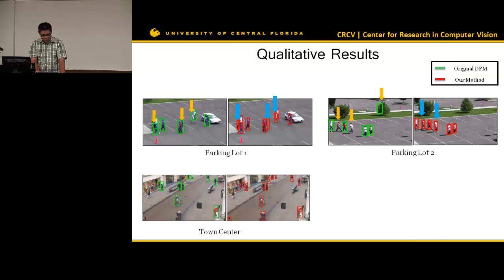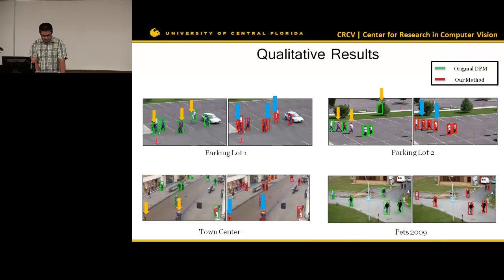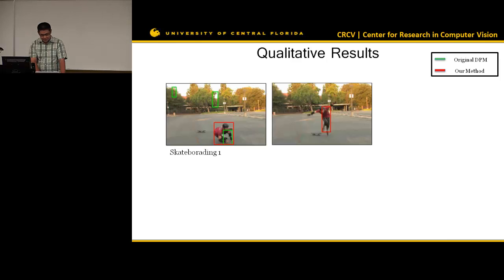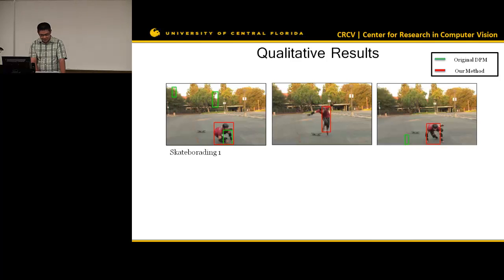Some more examples on the town center dataset show we correct some misdetections and average precision also improves. We also show examples on two videos with frequent pose changes. This is the skateboarding video — since the pose changes very frequently, the original DPM model cannot handle it, but our method using color cues can recover all these detections.